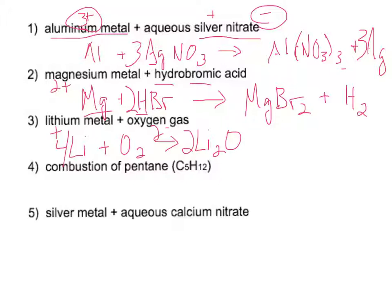Combustion of pentane. Anytime you have a combustion reaction, that means that you're reacting something with oxygen. Oxygen, remember, is a diatomic, so it needs to be O2. And when you combust a hydrocarbon, you get carbon dioxide and water.